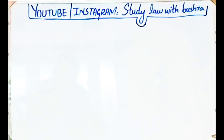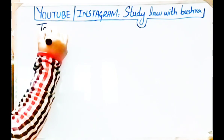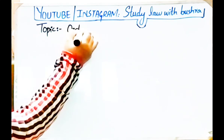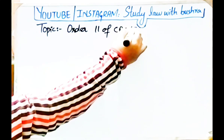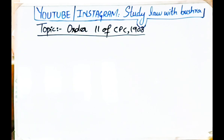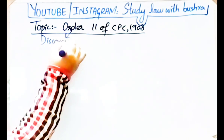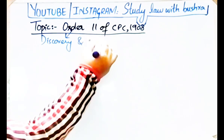Assalamualaikum viewers, welcome back to my channel Study Law with Pushtra. We were discussing Civil Procedure Code 1908, and in this video we are going to discuss Order 11 of CPC. Before starting, please subscribe to my channel, press the bell icon for latest updates, share this video with your friends, and don't forget to comment your feedback. Order 11 of CPC deals with the topic of discovery and inspection.